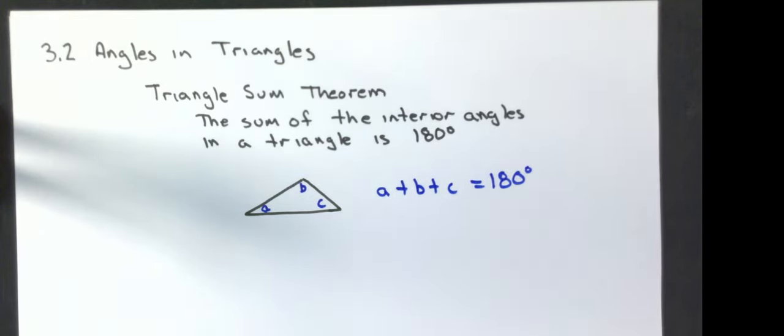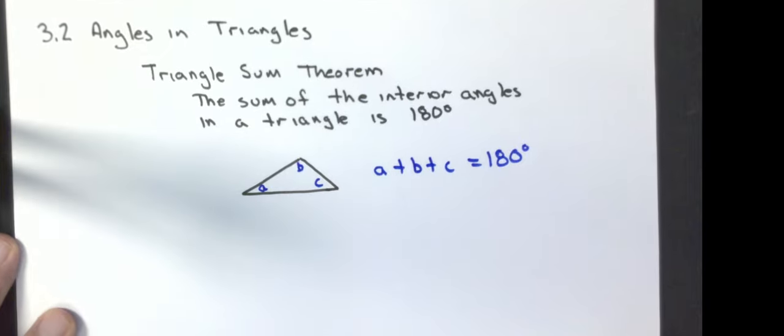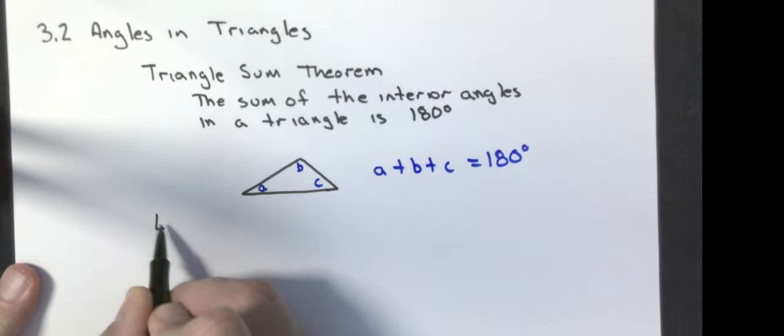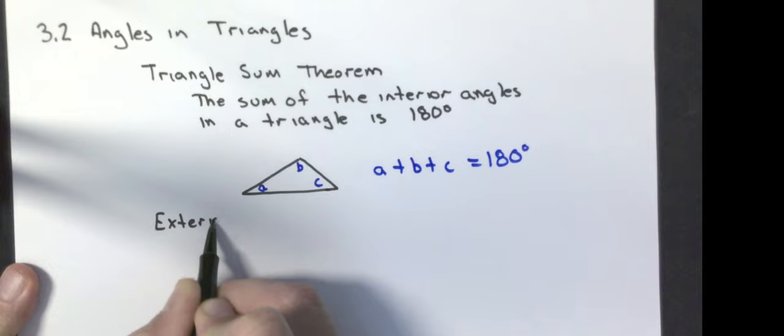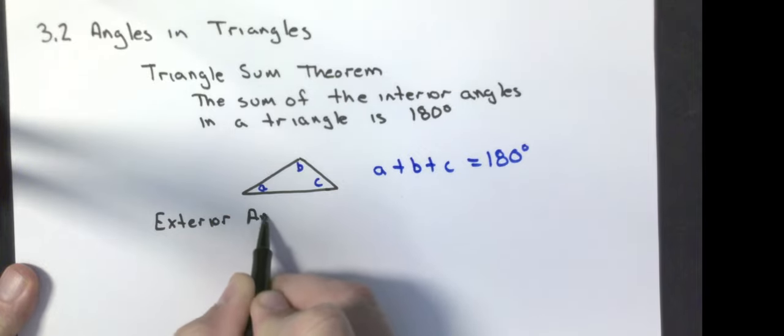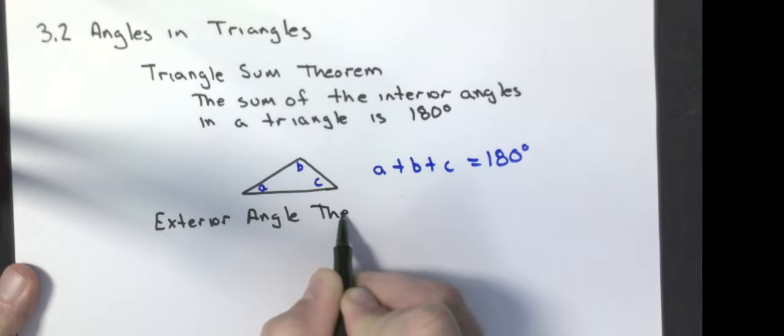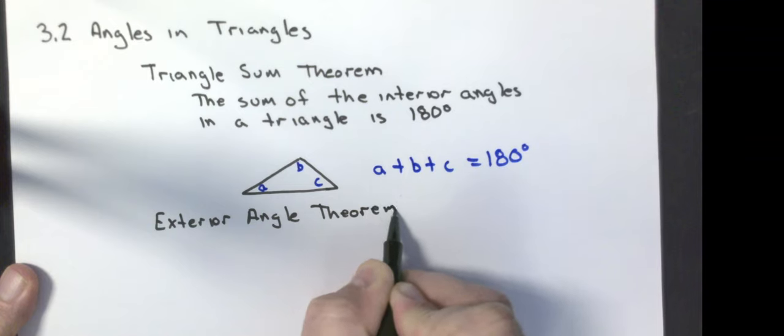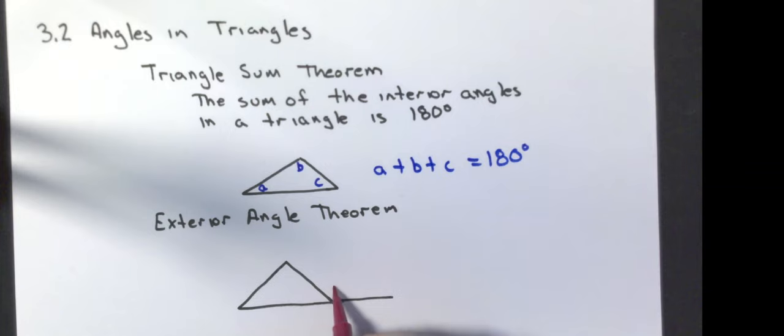The other fact that we are going to use comes from the exterior angle theorem. And what we have is we're going to have a triangle and we're going to let one of the sides come out. I'm going to call this side Z. The interior angles that are not touching, I'm going to call X and Y.